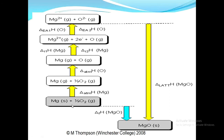For the direct path, magnesium and oxygen are reacting together to form magnesium oxide, and the enthalpy change for this step is known as the enthalpy of formation of magnesium oxide. That value would be given by the examiner.